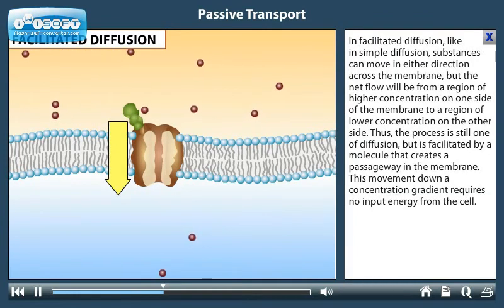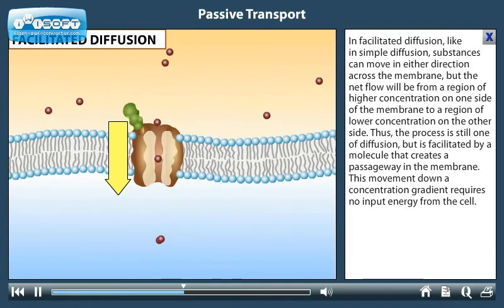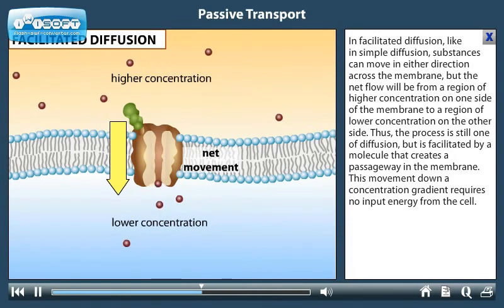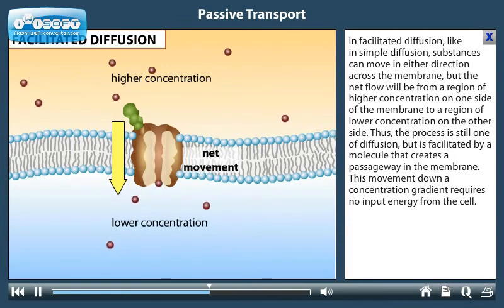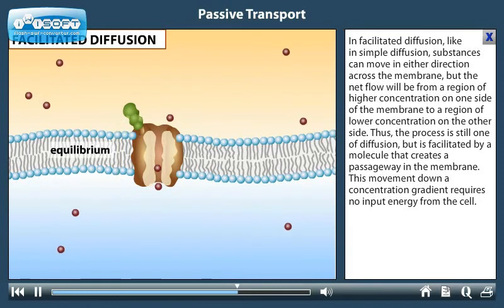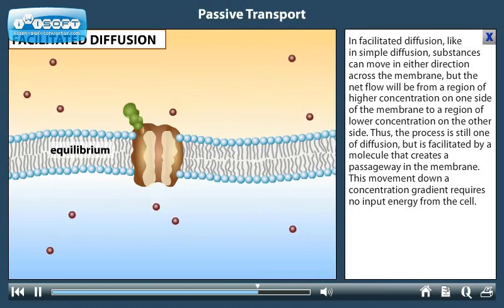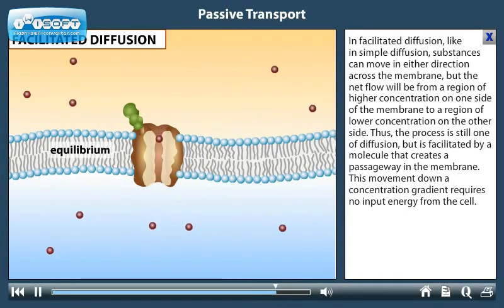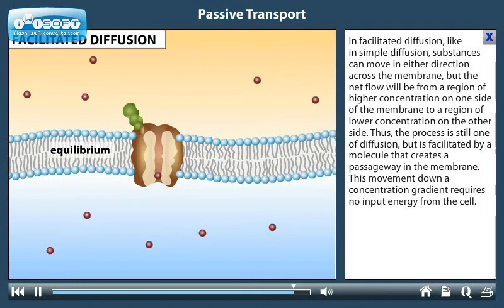In facilitated diffusion, like in simple diffusion, substances can move in either direction across the membrane, but the net flow will be from a region of higher concentration on one side of the membrane to a region of lower concentration on the other side. Thus, the process is still one of diffusion, but is facilitated by a molecule that creates a passageway in the membrane. This movement down a concentration gradient requires no input energy from the cell.